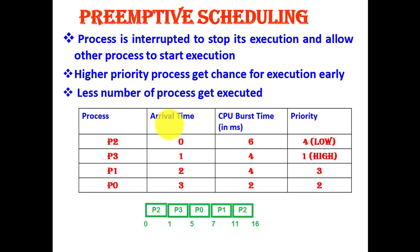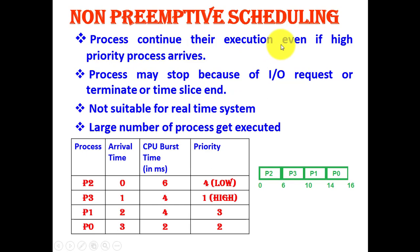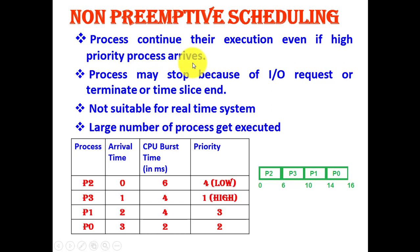Next, let us discuss non-preemptive scheduling. Opposite to preemptive, non-preemptive means no interruption is allowed. The current process continues even if a higher-priority process arrives, unless it waits for an I/O request or terminates by itself. This type of scheduling is not suitable for real-time systems, as there may be urgent processes that need to be executed. Due to this non-interruption, a larger number of processes gets executed.